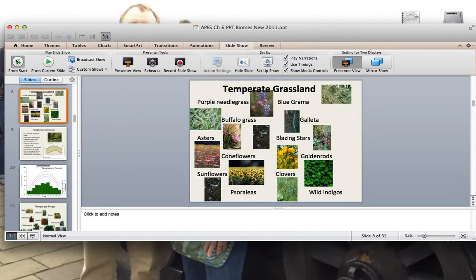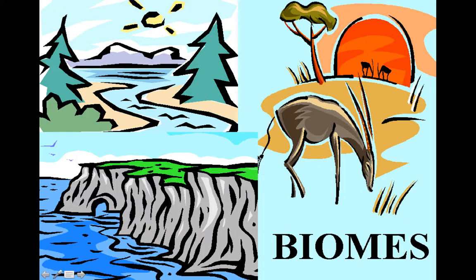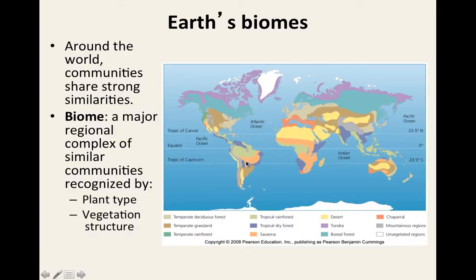Today we're going to look at biomes. Biomes are regional areas seen around the world, and the main way they are classified is not only by plant and vegetation but also by temperature and the amount of precipitation located in those particular regions.